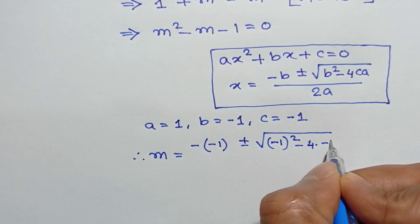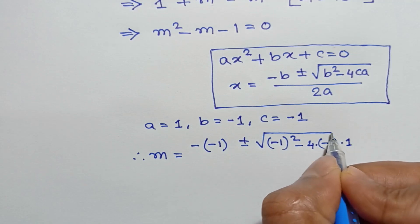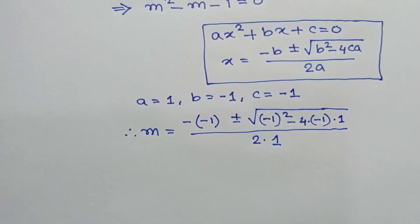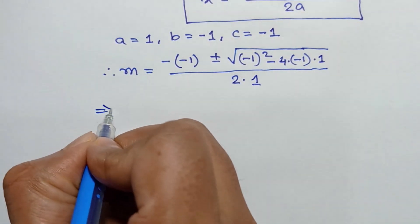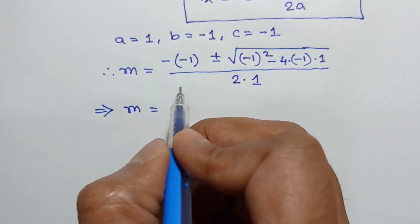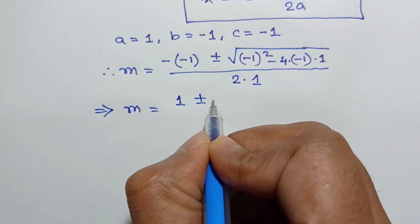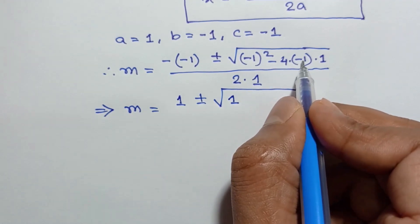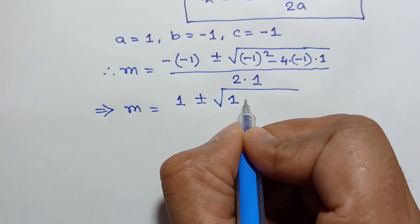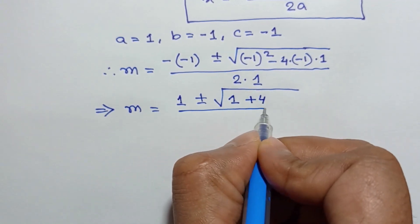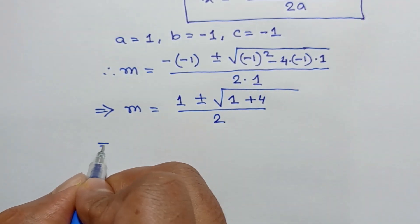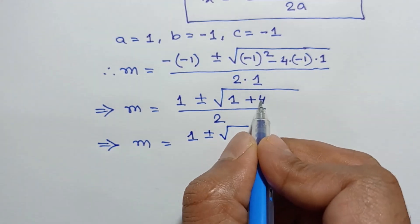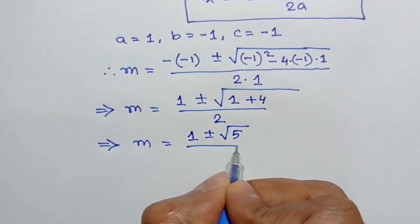So we get m equals negative b, which is negative 1, plus or minus the square root of b squared — negative 1 whole squared — minus 4 times c (negative 1) times a (1), over 2 times a (1). This simplifies to m equals 1 plus or minus the square root of 1 plus 4, which is 5, over 2.